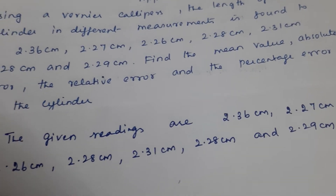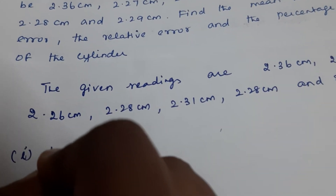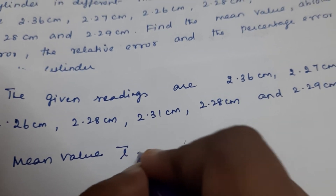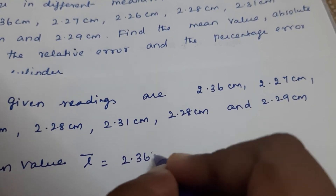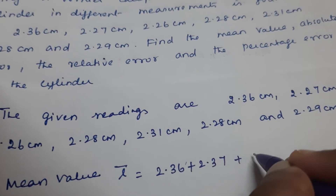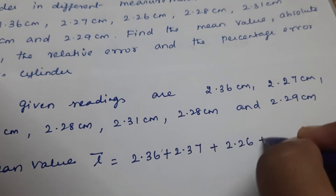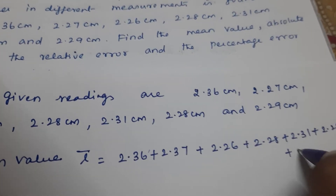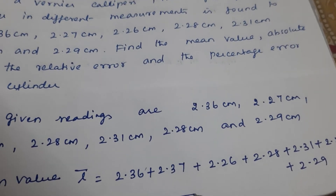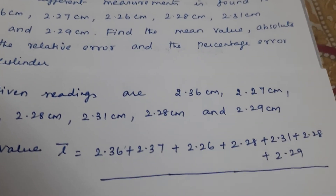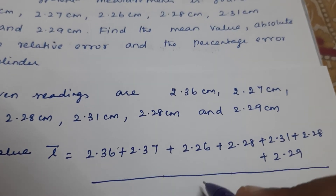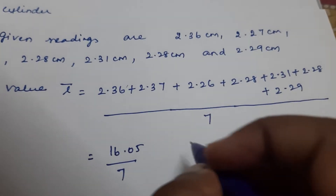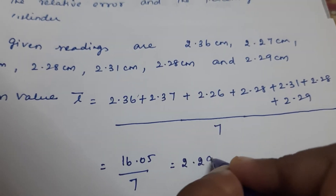The first thing to calculate is the mean value, L̄. L̄ is equal to (2.36 + 2.27 + 2.26 + 2.28 + 2.31 + 2.28 + 2.29) divided by 7 — the number of terms. That gives 16.05 divided by 7, which equals 2.29 cm.